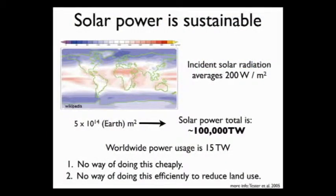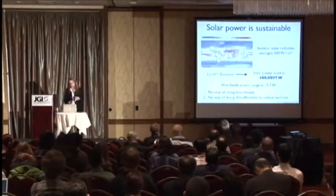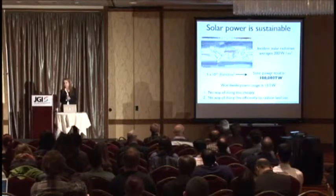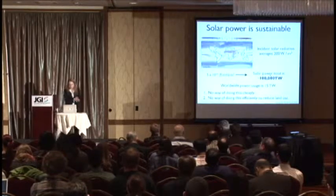Solar power, however you harvest it, is potentially sustainable. The total solar power hitting the earth is about 100,000 terawatts, and currently worldwide power usage is only about 15 terawatts — so we've got a lot to work with. We have problems: we have no way of doing this cheaply, and we don't have good ways of doing this efficiently to reduce land use. Obviously these are concerns that we're all working on.